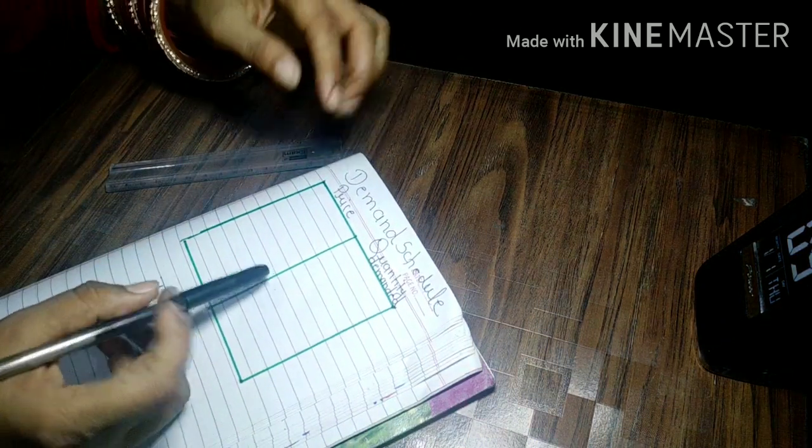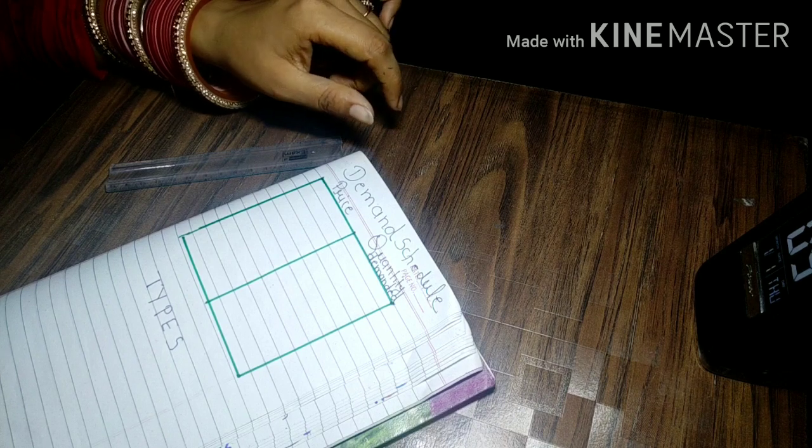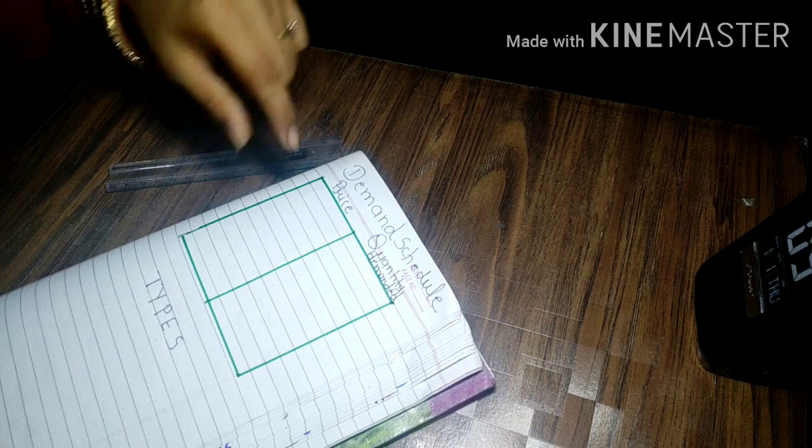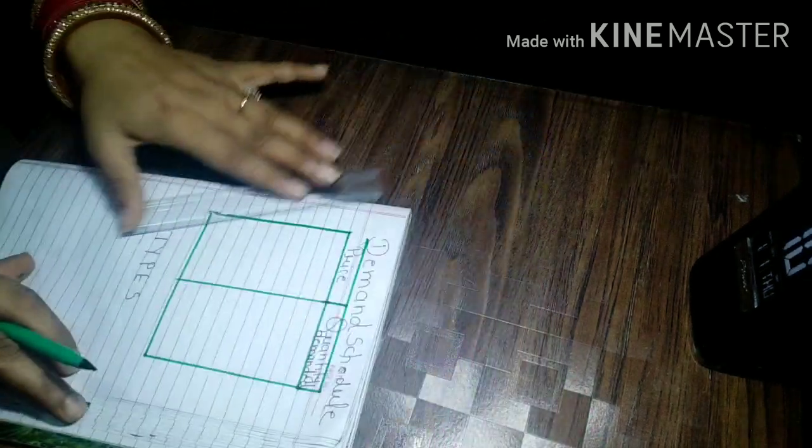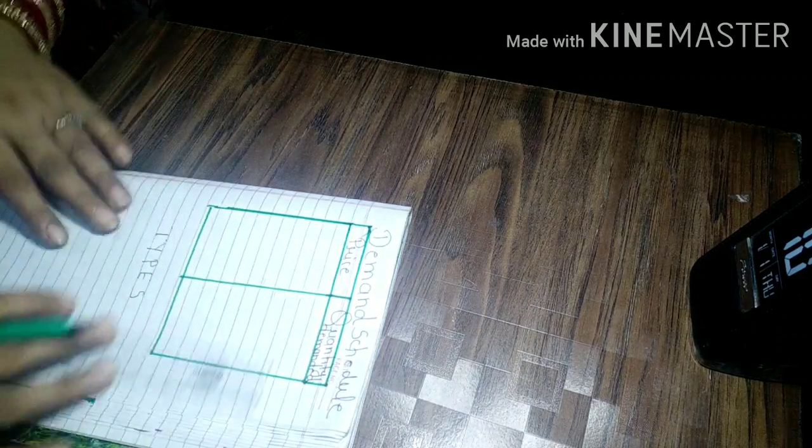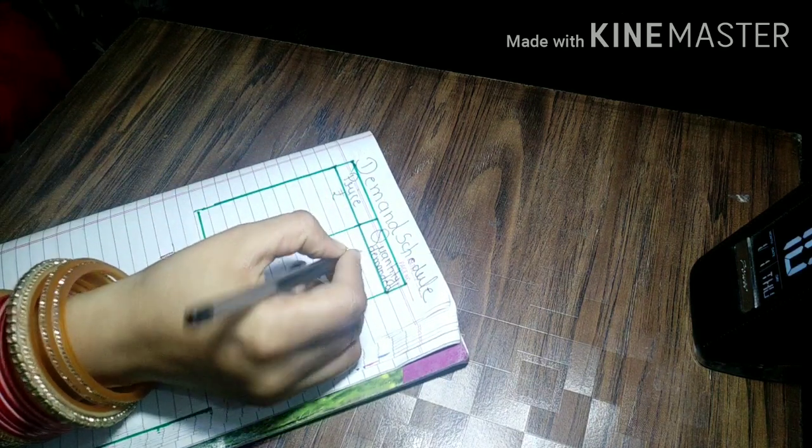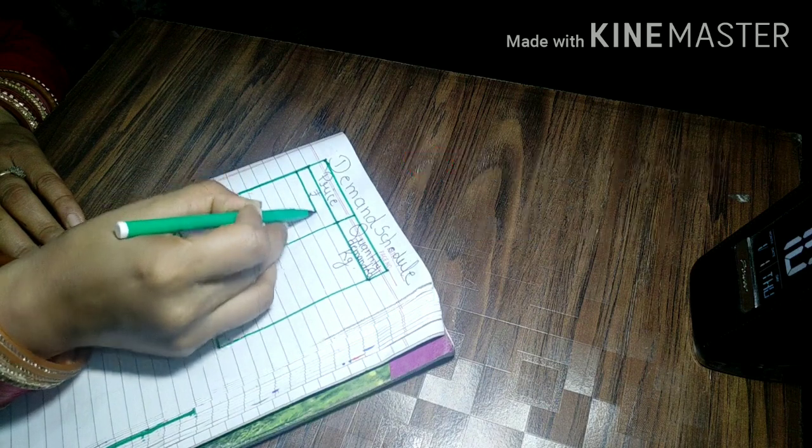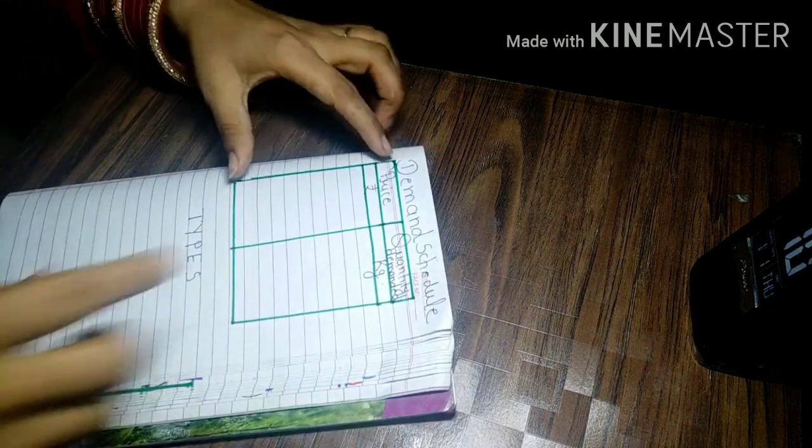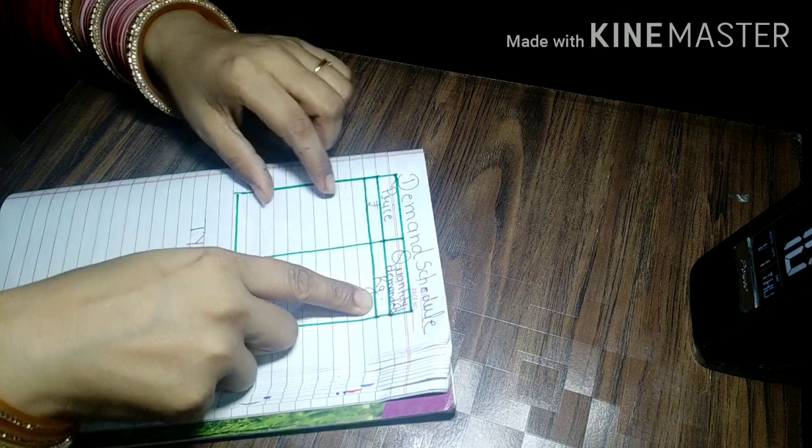Different prices, as prices change, quantity demanded changes because there is an inverse relationship between price and quantity demanded. This is how our demand schedule is made. We know that price is in the form of rupees and quantity demanded will be in any unit, suppose here we take the unit of kg. This is a demand schedule showing relationship between price and quantity demanded for any product.